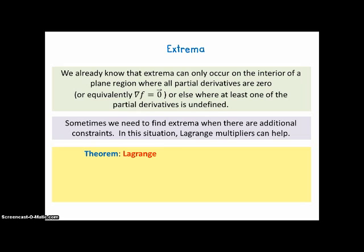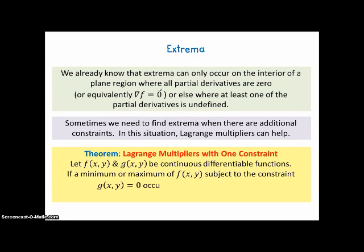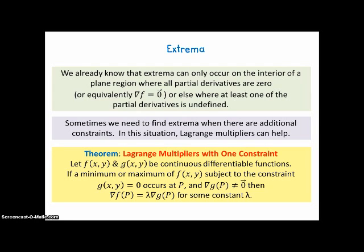Here's the big theorem for this section — Lagrange multipliers with one constraint. Let f(x,y) and g(x,y) be continuous differentiable functions. If a minimum or maximum of f subject to the constraint g equals zero occurs at point p, and if the gradient at p is not the null vector, then the gradient of f at p equals lambda times the gradient of g at p for some constant lambda. The proof is in your book.